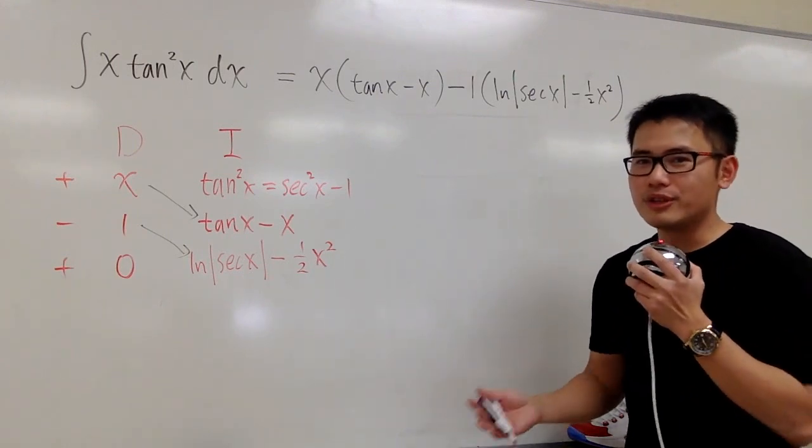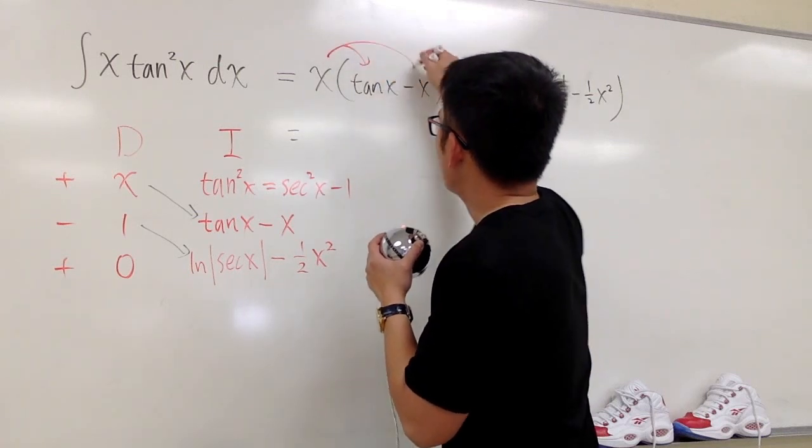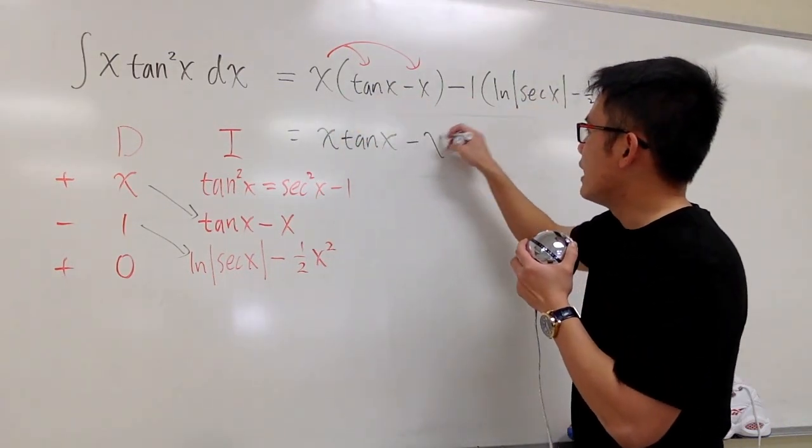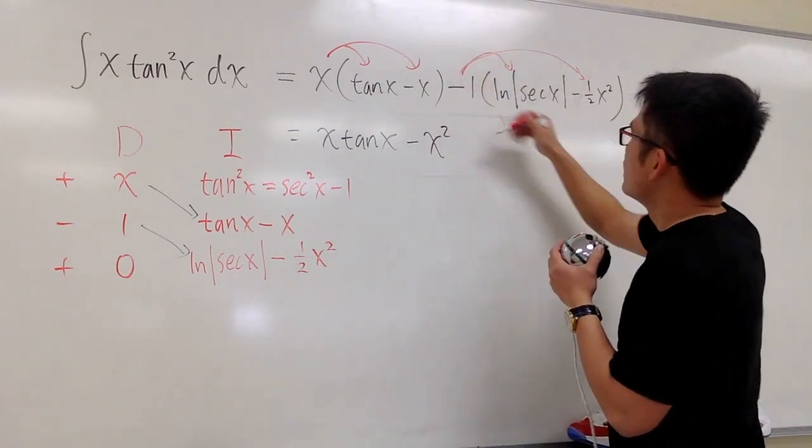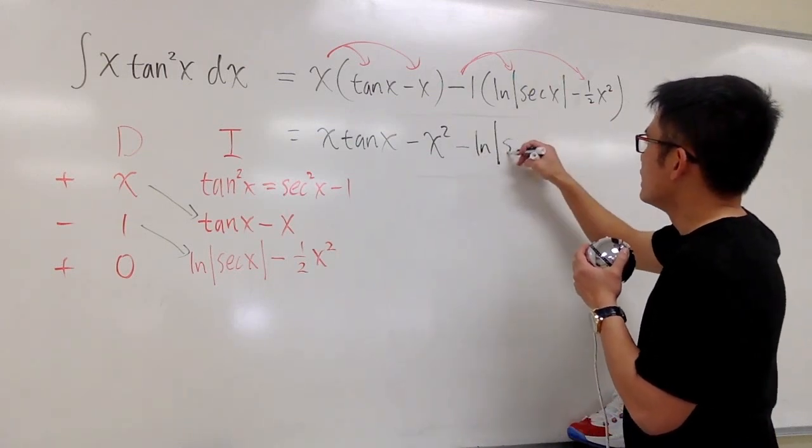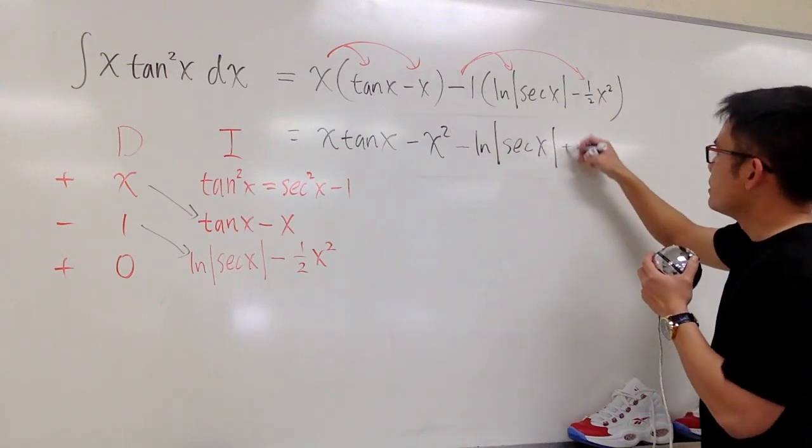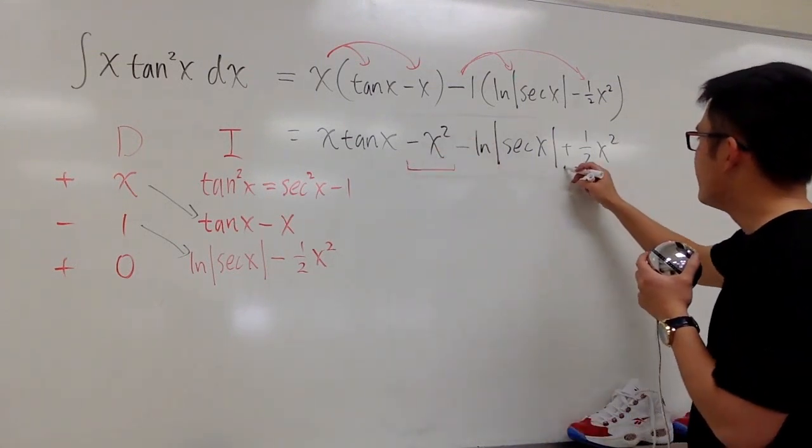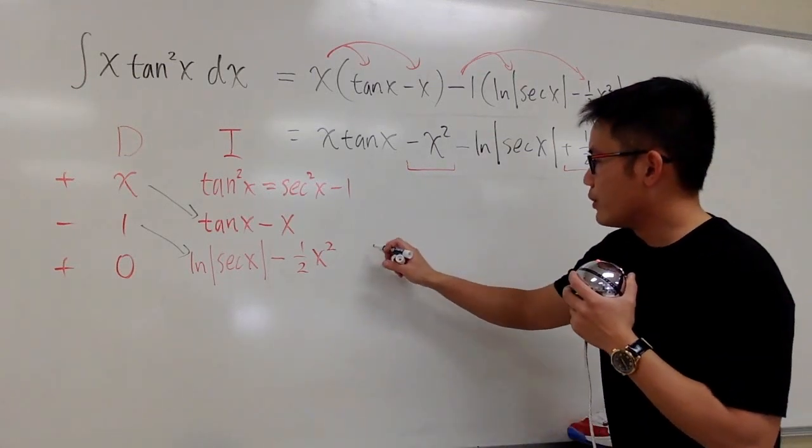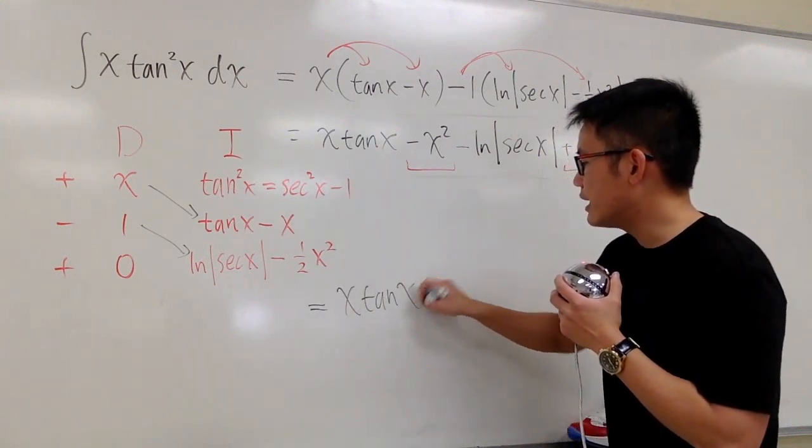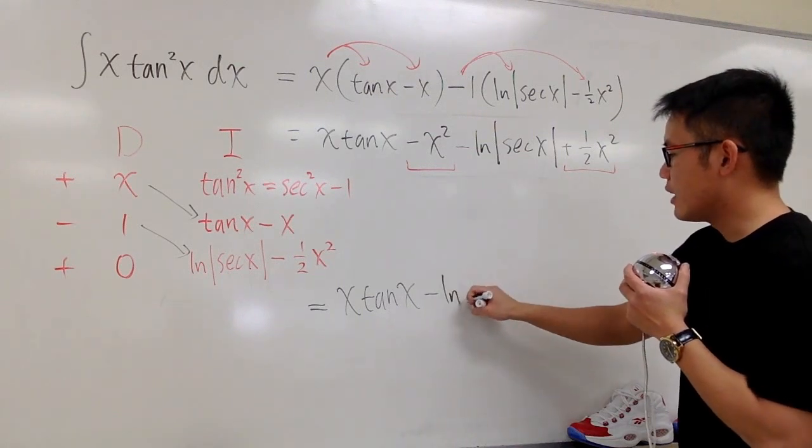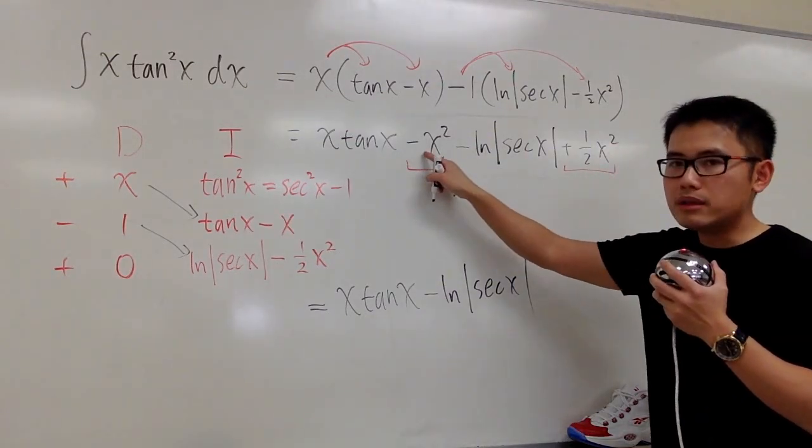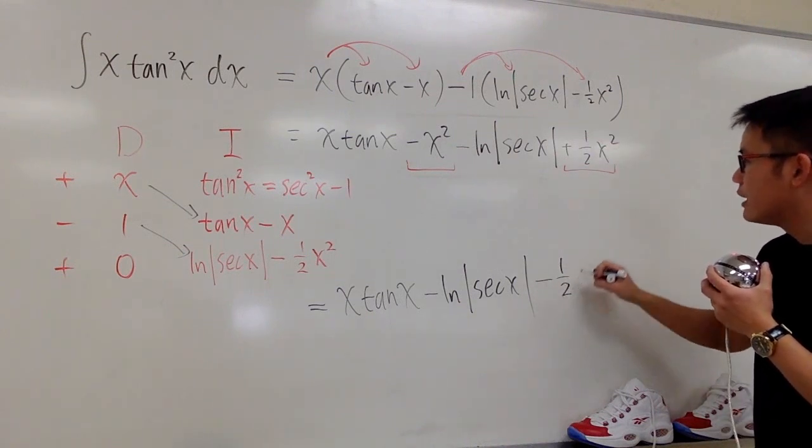Now we can just do some algebra to simplify the expression a little bit more. For example, I can distribute the x into the parentheses right here, and then we are looking at this as x tangent x, and x times negative x, that's negative x squared. Also, we can distribute the negative 1 into the parentheses like this. So we have negative ln absolute value secant x, negative times negative becomes plus 1 half x to the second power. The only thing we can combine is the negative x squared and then the positive 1 half x squared. So here, let me just write down the answer down here. This is the x times tangent x. Let me write down this part first. This is minus ln absolute value secant x, and then negative x squared plus 1 half x squared. We are doing negative 1 plus 1 half. So we have minus 1 half, and that's the x squared term.